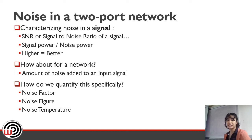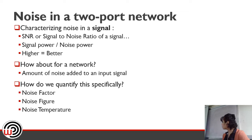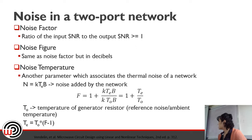To characterize noise in a signal, we use the signal-to-noise ratio, or SNR, which is equal to the signal power divided by the noise power. A good SNR means a higher value, indicating better signal quality — either higher signal power or lower noise power. To quantify noise in a network, we use the noise factor, noise figure, and noise temperature.